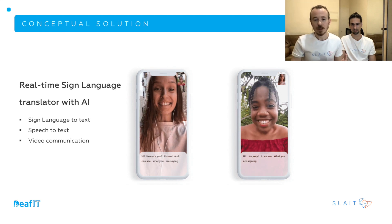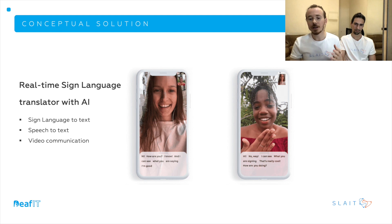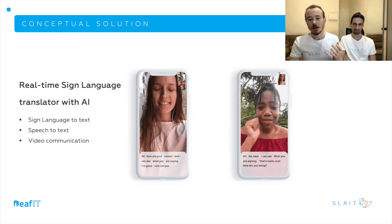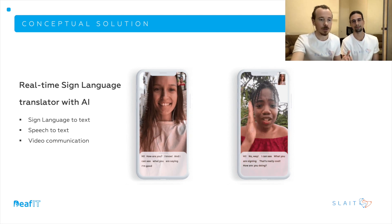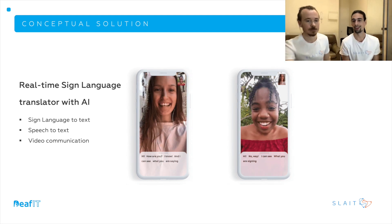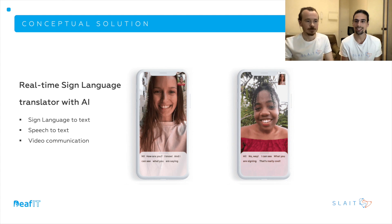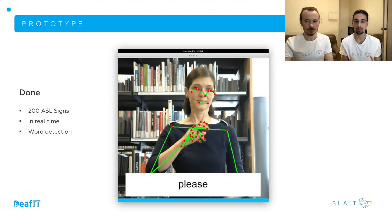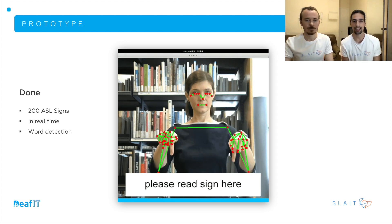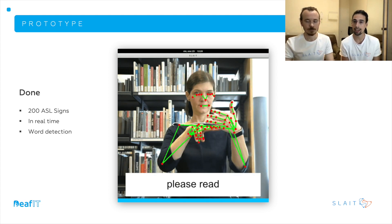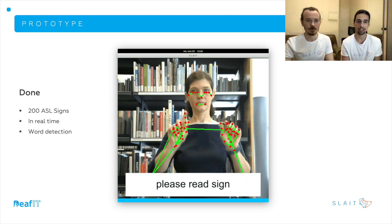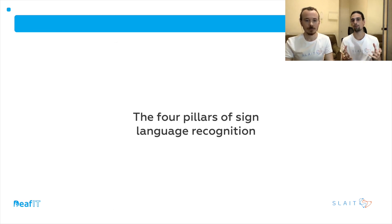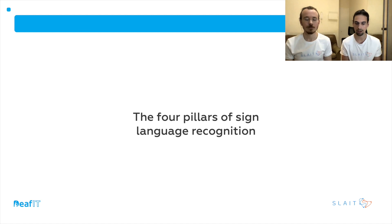This is a big challenge. We are on the way to our goal and have already achieved impressive results. Let my partner Antonio talk about accomplishments and the challenges we face. Thank you very much, Evgeny. Our prototype is capable of running 200 ASL signs in real time from a four-year-old PC. Let's go ahead and check what research we've got and what are the pillars of sign language recognition and how this affects our project.